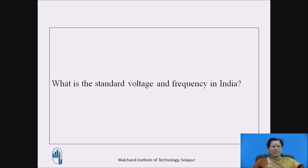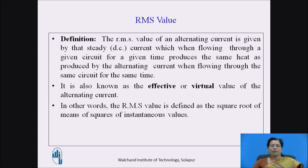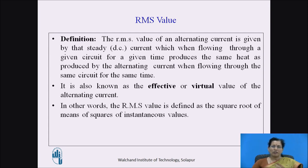Pause the video and think about this: what is the standard voltage and frequency in India? In India, the standard voltage used for homes is 230 V and the frequency is 50 Hz. The definition of RMS value is: the RMS value of an alternating current is given by that steady current which, when flowing through a given circuit for a given time, produces the same heat as produced by the alternating current when flowing through the same circuit for the same time. In other words, the RMS value is defined as the square root of the mean of squares of instantaneous values.